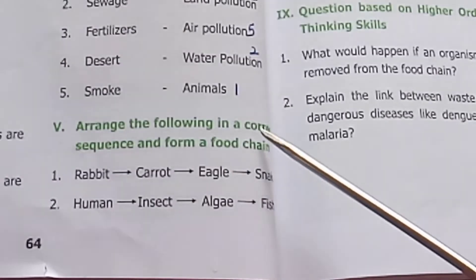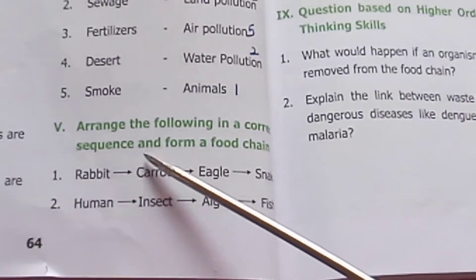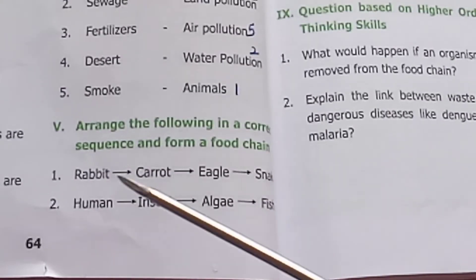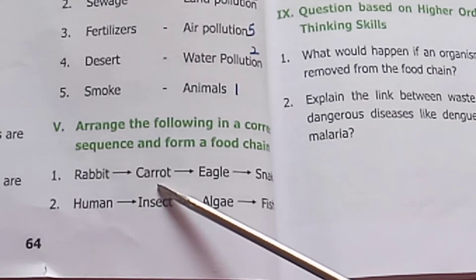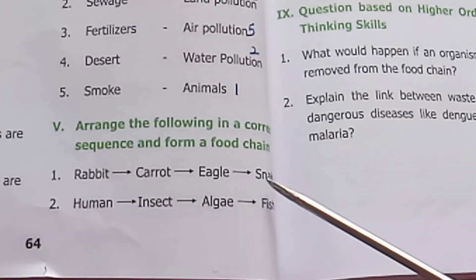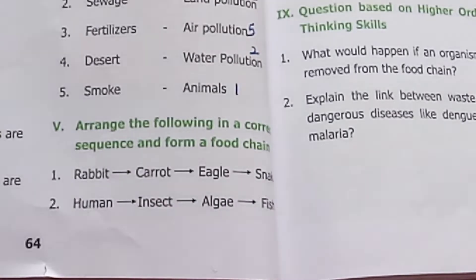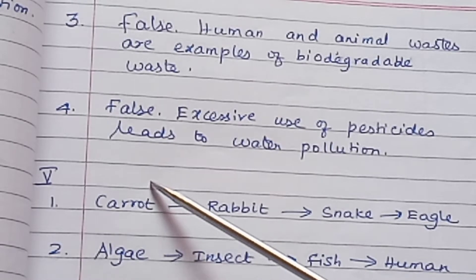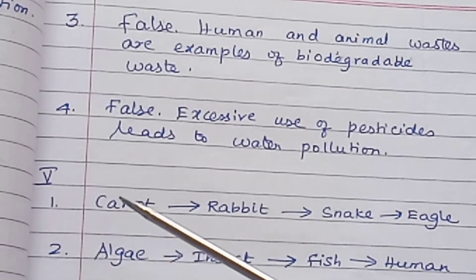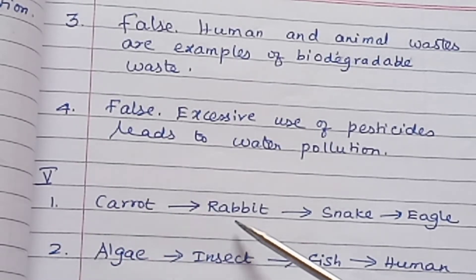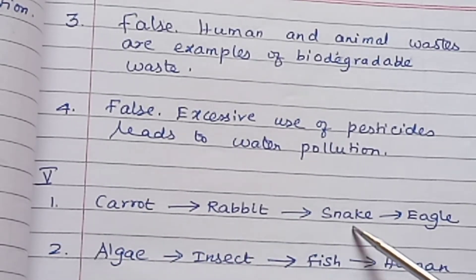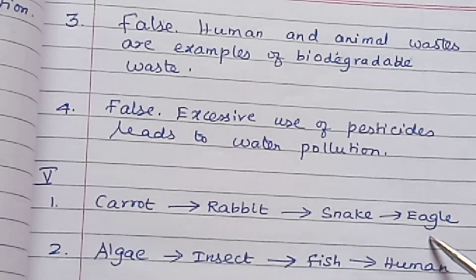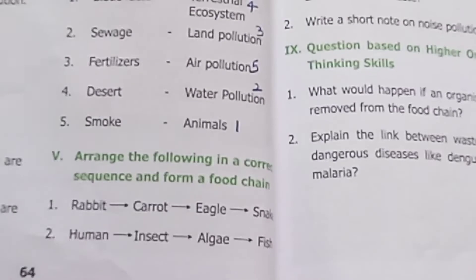Arrange the following in correct sequence to form a food chain. Given: rabbit, carrot, eagle, snake. Food chains start with producers, so the correct sequence is: carrot, rabbit, snake, eagle.